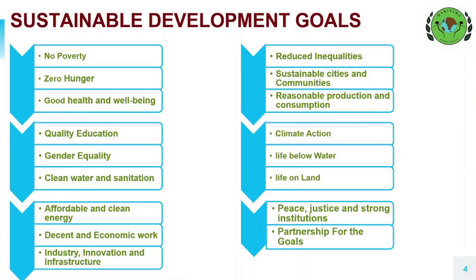To achieve sustainable development in partnership and peace, 193 members of the United Nations unanimously adopted the 17 Sustainable Development Goals. These goals are a set of 17 integrated and interrelated goals to protect the planet and ensure that humanity enjoys peace and prosperity by 2030. These goals are not just restricted to the environmental sector but focus on the overall growth of human civilization.